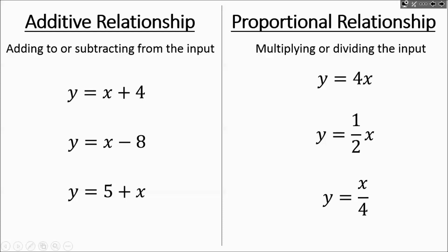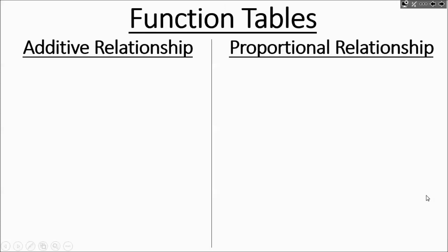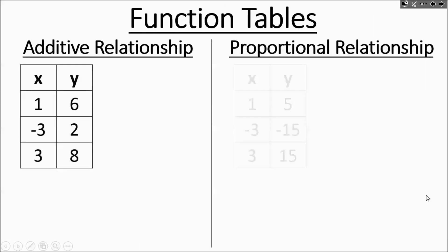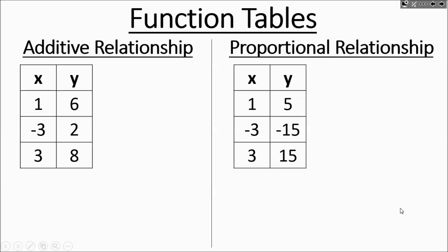That's the fairly easy part — most students have no problem with that. Where it gets challenging is when you're looking at tables and trying to figure out if a relationship is additive or proportional, and even if you know which it is, what's the rule? What are you doing to the input to get the output? y equals something times x, or y equals x plus something — that's where it gets tough. So we're going to show you some tricks.